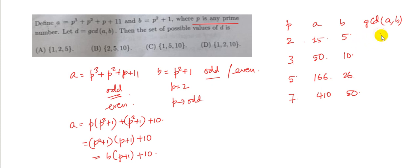So that means the GCD in the first case is 5, in the second case it is 10, in the third case it is 2, in the fourth case it is 10 again. So that means the GCD would be either of 2, 5 and 10.